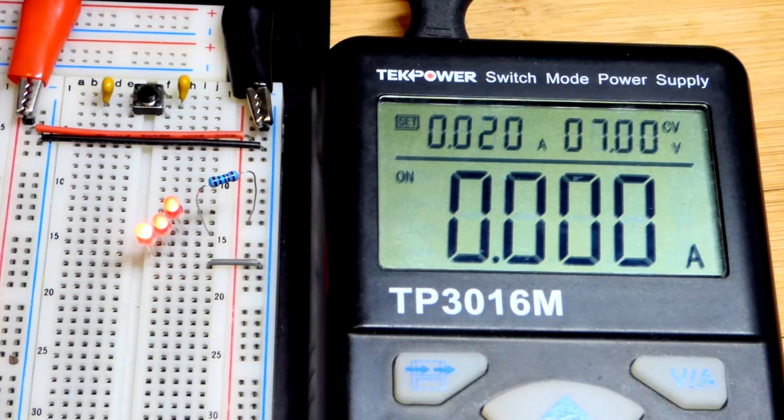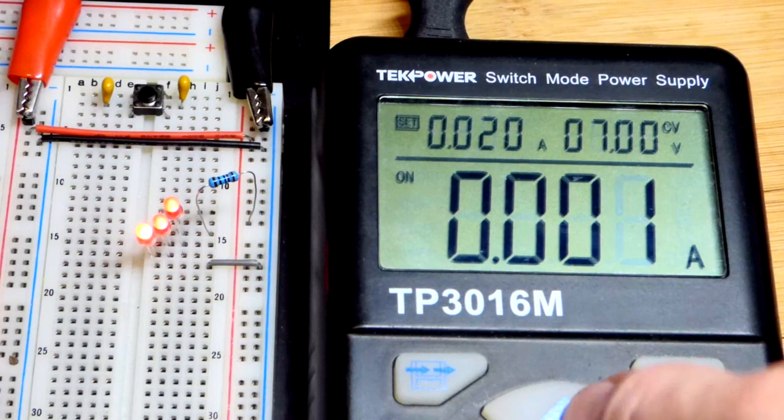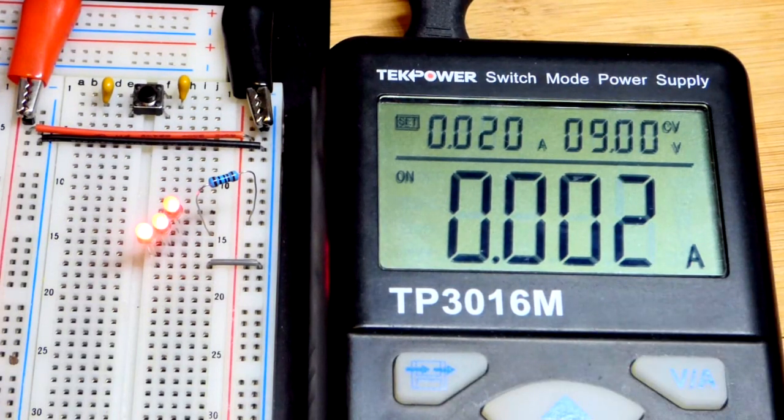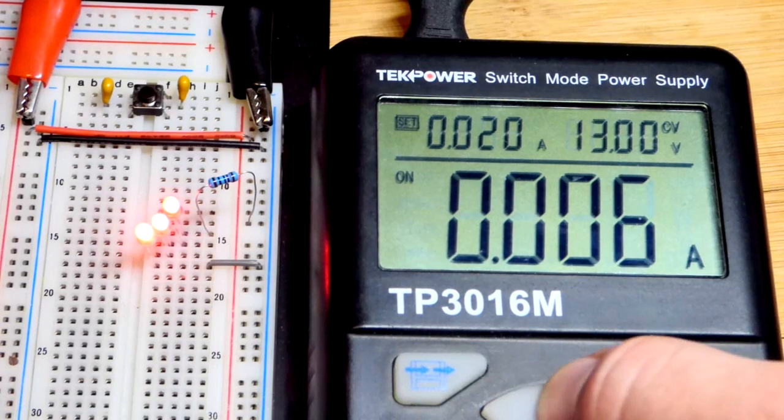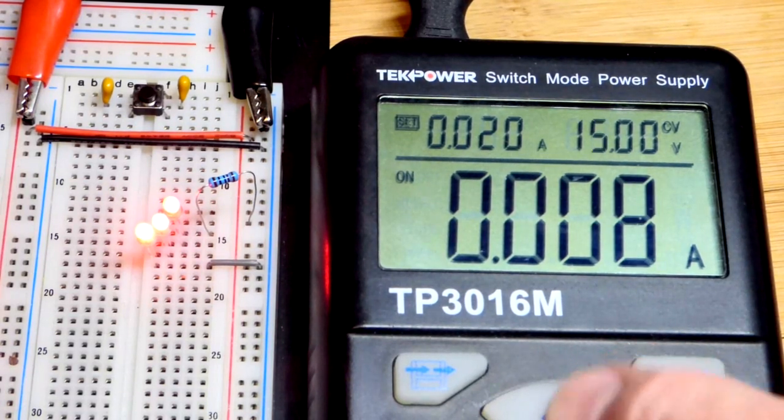And there you can see at 7 volts, it's wavering at that one. But if I increase it to 9, now we're back to about 2 or 3 milliamps right there. And so I can keep raising it as much as I want until we get the current we want.